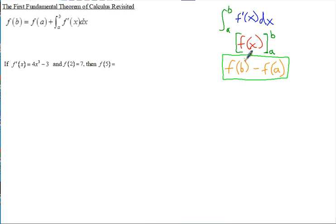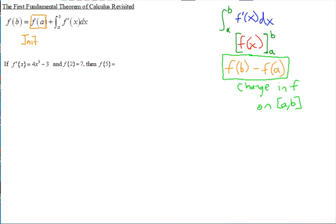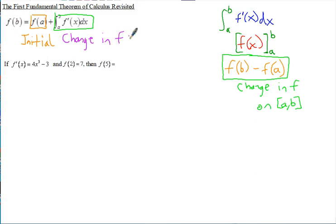So that's one way of seeing why this definite integral represents the change in the original function on the interval from A to B. Because if you take where you end up minus where it started, that's how much it changed by. The way we usually utilize it, though, is you start with some initial value, f of A — you know where the function starts. You get f of B by just adding f of A to the other side, and the definite integral represents the change in the original function on the interval from A to B.